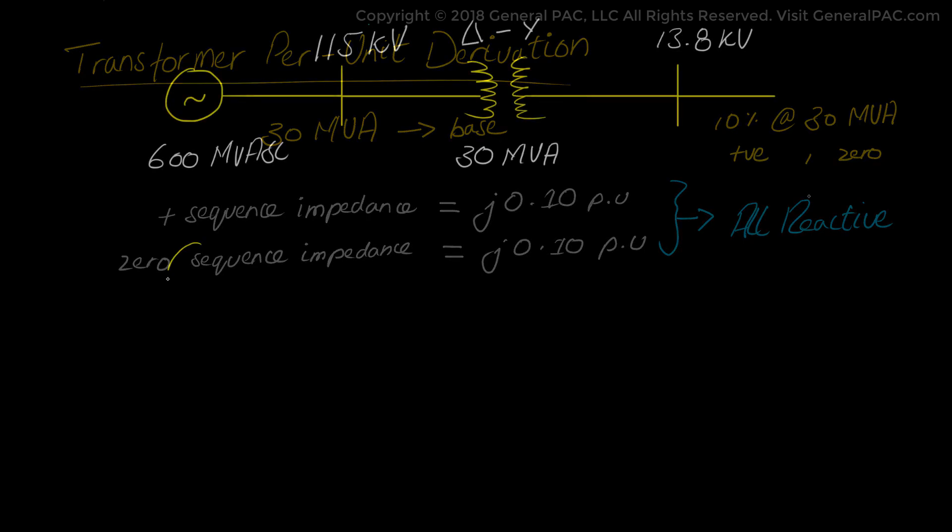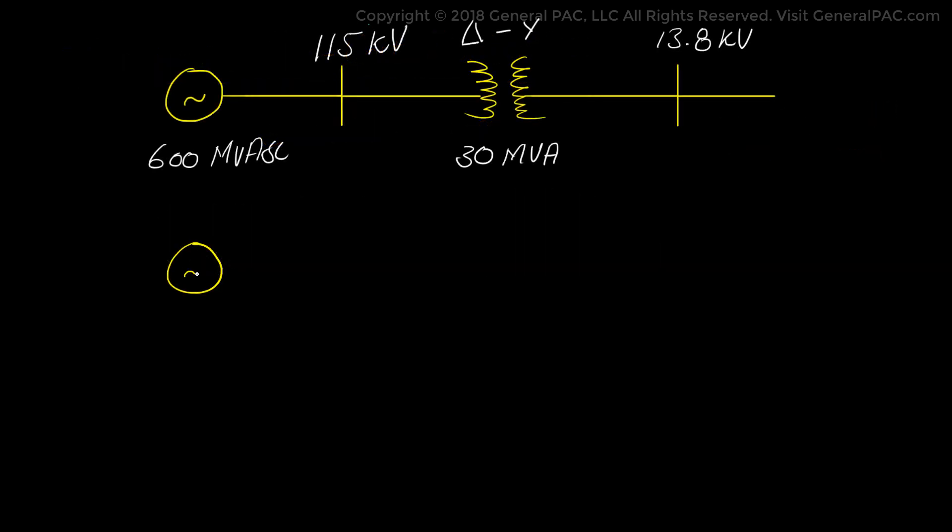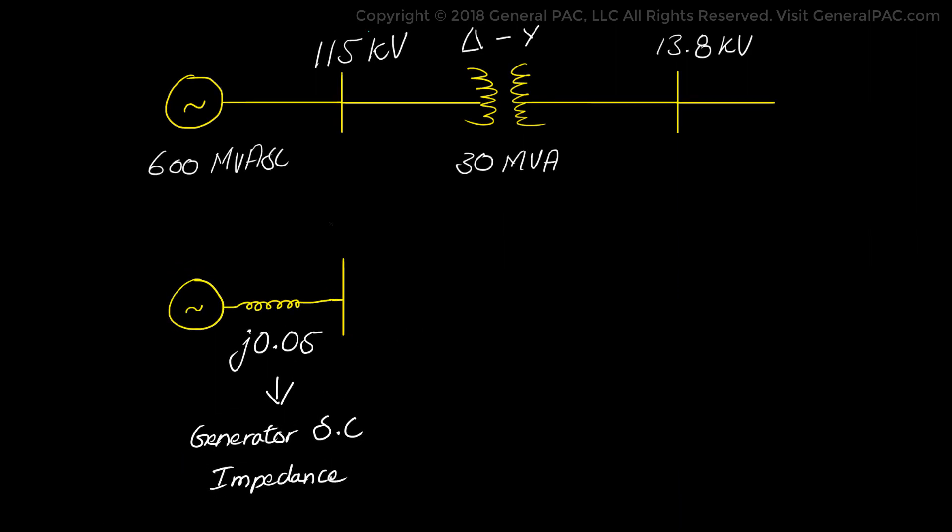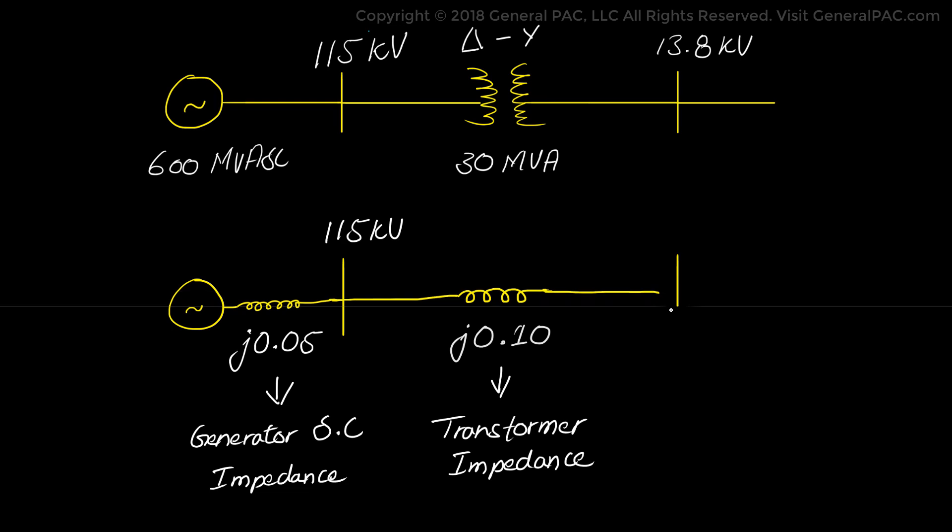Now once we draw the values in a per unit converted system it's basically the generator symbol which is attached to an inductor which we are going to call j0.05 impedance which is a generator impedance. That's connected to the 115 kV bus and which is connected to another inductor which we will call j0.10 impedance. That's the transformer impedance which is connected to the 13.8 kV bus.